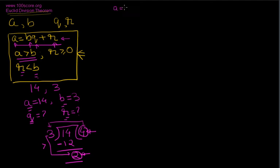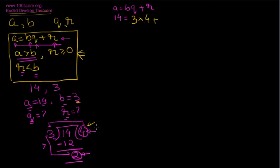The equation says A is equal to B times Q plus R. A is 14, B is 3, Q is 4 (the quotient), and R is 2 (the remainder). Substituting these values confirms our Euclidean division theorem. As I said, any two numbers can be represented in this format.